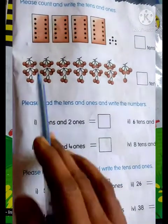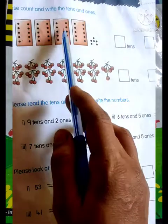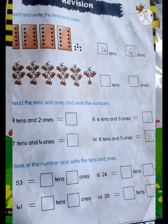So friends, here is ten. Count: 1, 2, 3, 4. Write the 4, and 1, 2, 3, 4, 5, 6. So 4 tens and 6 ones. Okay friends.